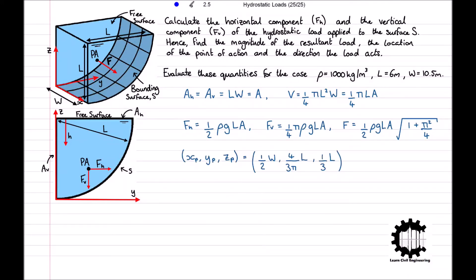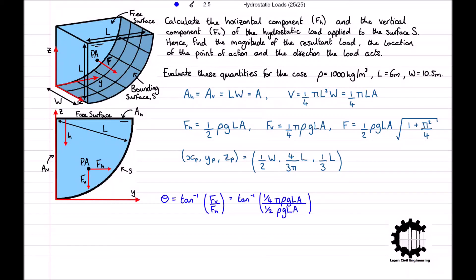The direction of the load is found using theta equals the inverse tangent of FV over FH, where theta is the angle from the horizontal plane. Substituting our values gives the inverse tangent of one quarter pi rho G LA over one half rho G LA, which simplifies to the inverse tangent of one half pi. Therefore theta equals 1.00 radians, or 57.5 degrees.